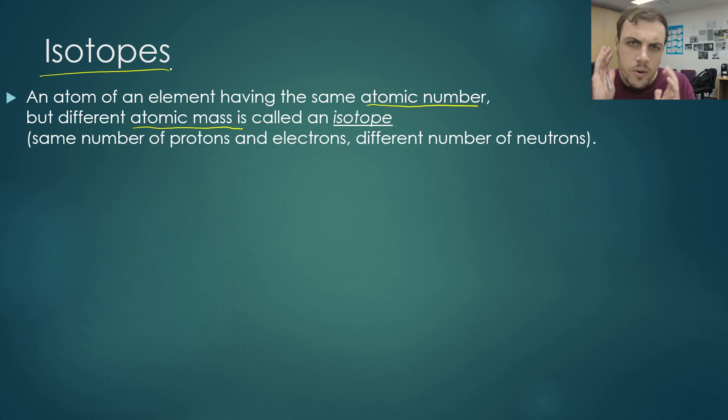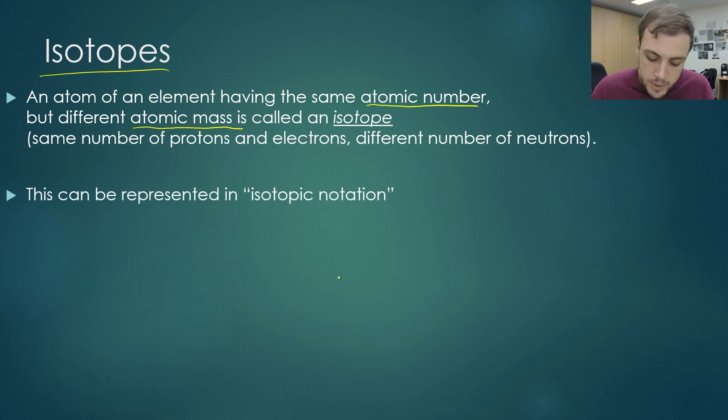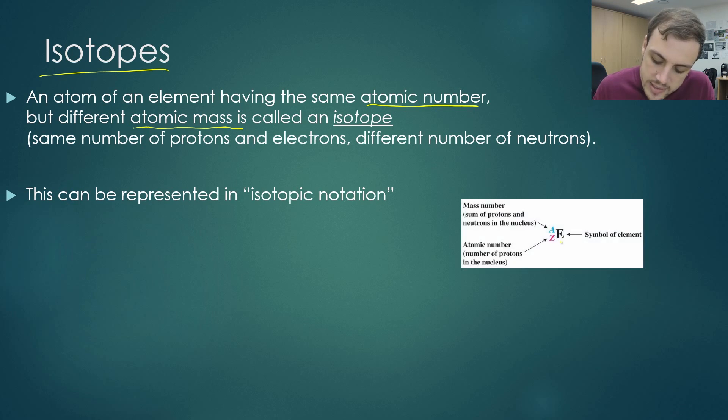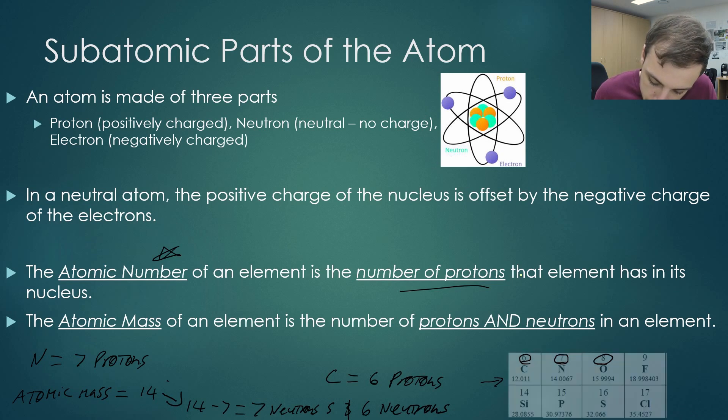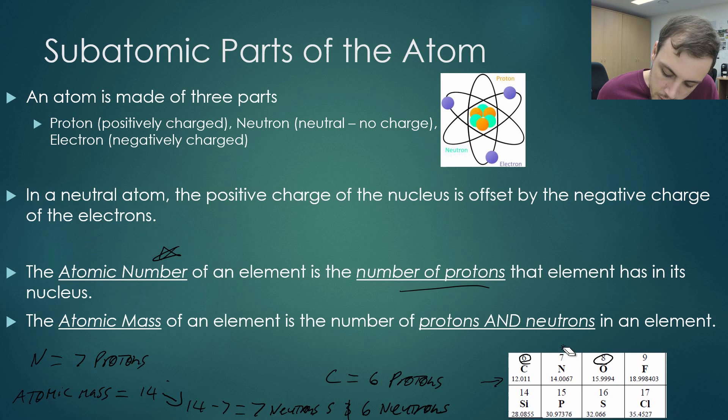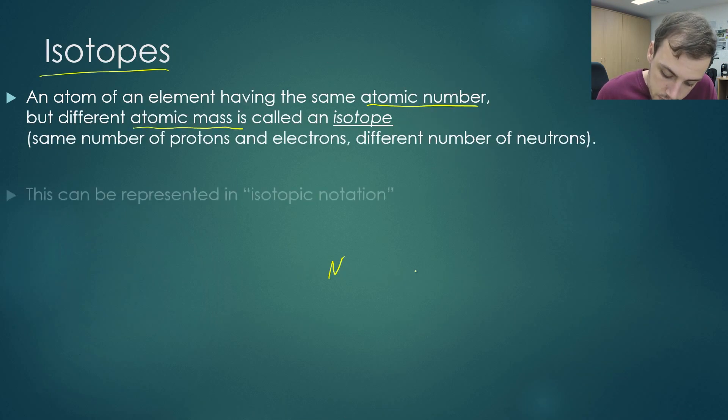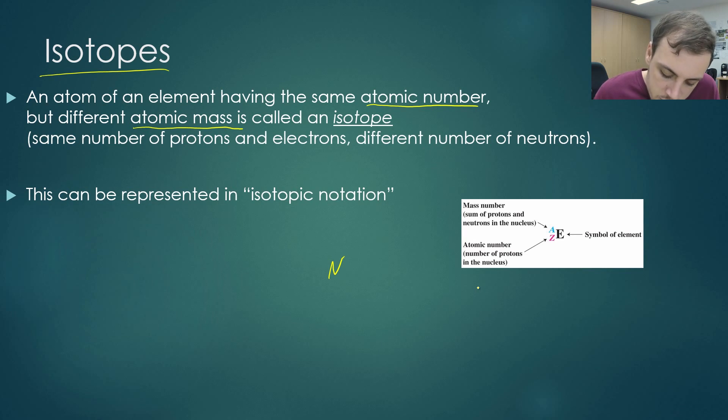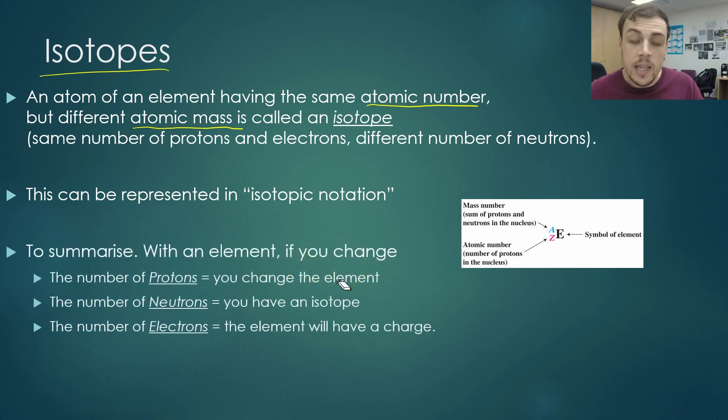Now this can be represented in isotopic notation. Now that's what we can see here. So typically this E will be the symbol of our element. So let's choose nitrogen. So nitrogen, if we had a look on our periodic table, nitrogen had an atomic number of seven and an atomic mass of 14. So our atomic mass, we would put 14 and the atomic number we put seven. So this is how we would write nitrogen in isotopic notation.